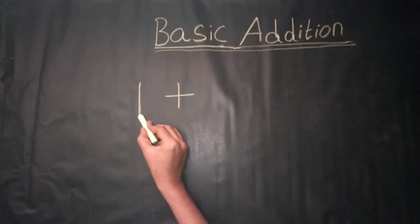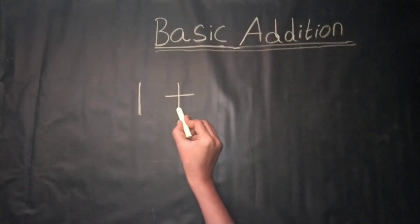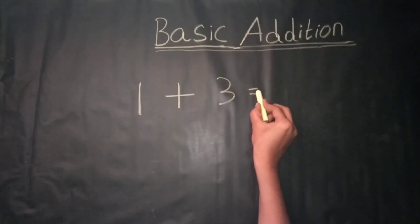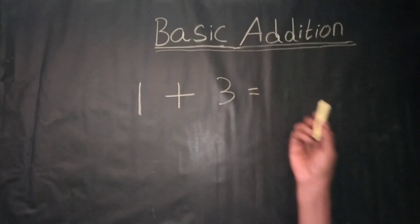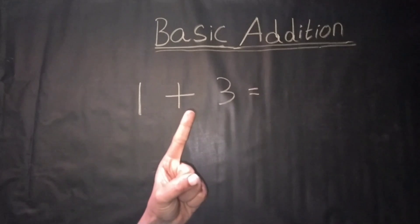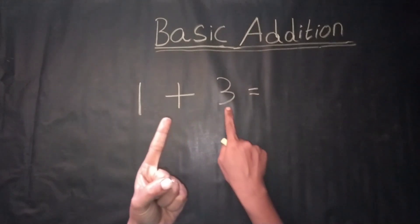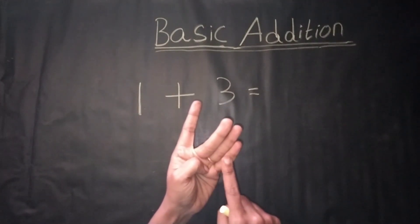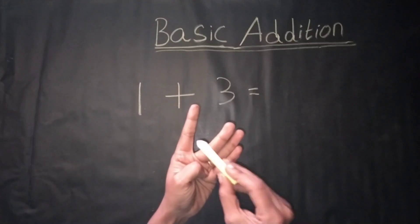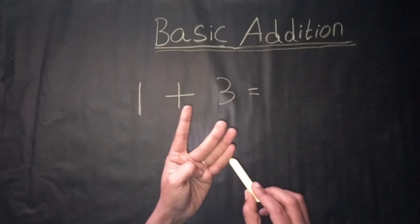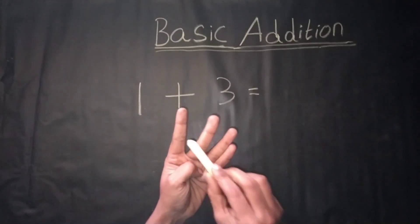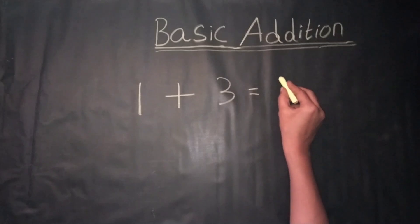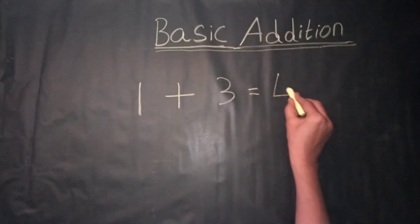1 plus 3 is equal to — counting by fingers, 1 plus 3. Count together: 1, 2, 3, 4. We get the answer: 4.